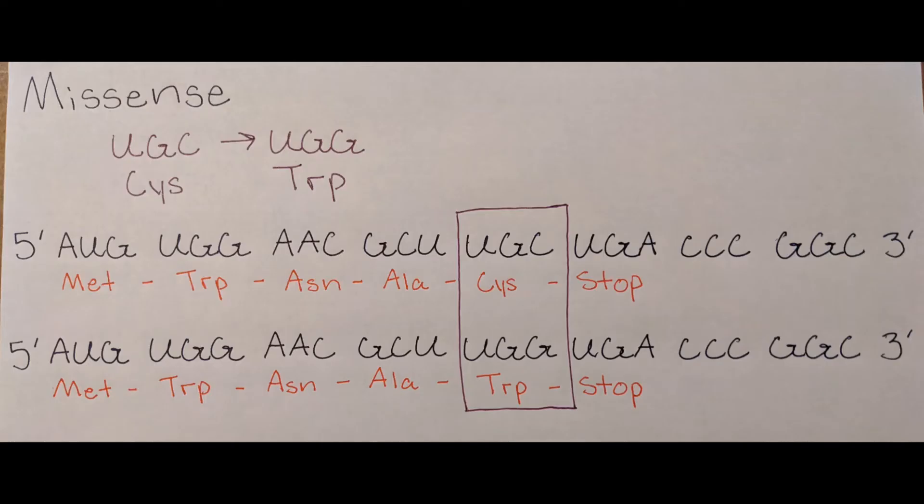A missense mutation is the substitution of a single nucleotide base for another. This substitution results in a codon that inserts a different amino acid into the sequence, changing the protein. This can cause changes in the effectiveness of a protein, making it more or less productive, or can make the protein non-functional. It can also have no effect on the protein structure.